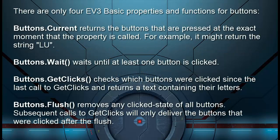There are only four EV3 Basic properties and functions for buttons. Buttons.current returns the buttons that are pressed at the exact moment that the property is called. For example, it might return the string LU.